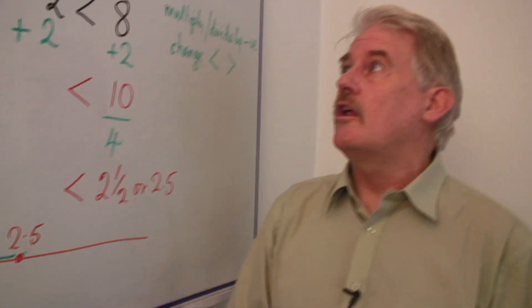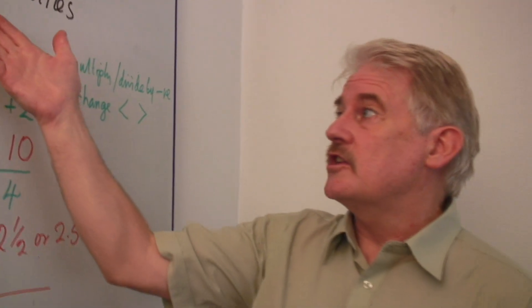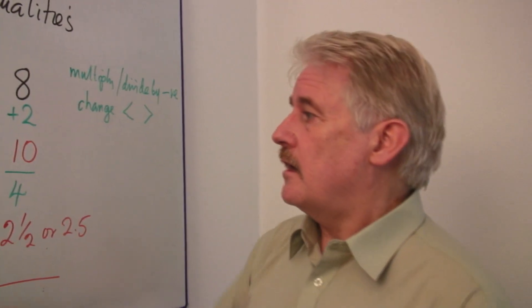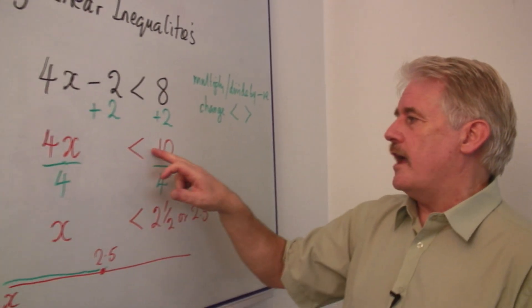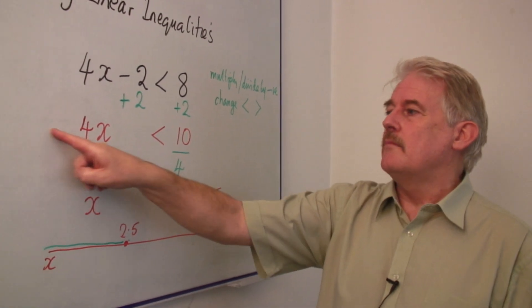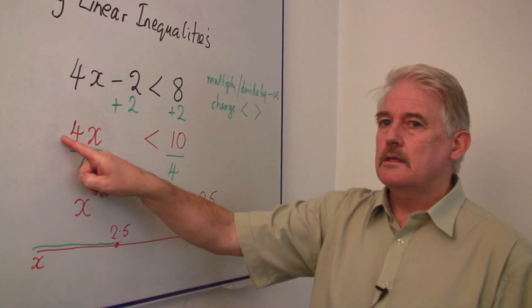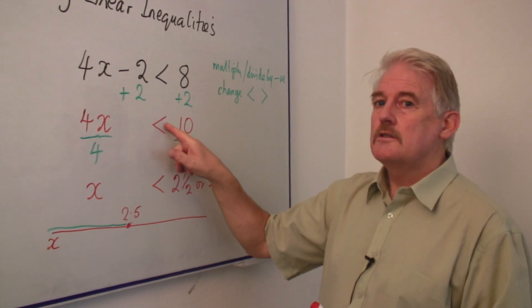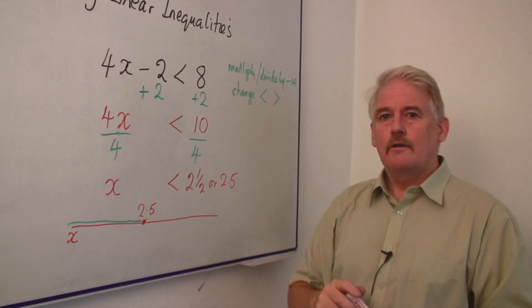So that is how we solve a linear inequality. And remember, if this was minus 4x, then I'd have to be very careful because when I multiplied by a minus here, I have to change this round. Good luck.